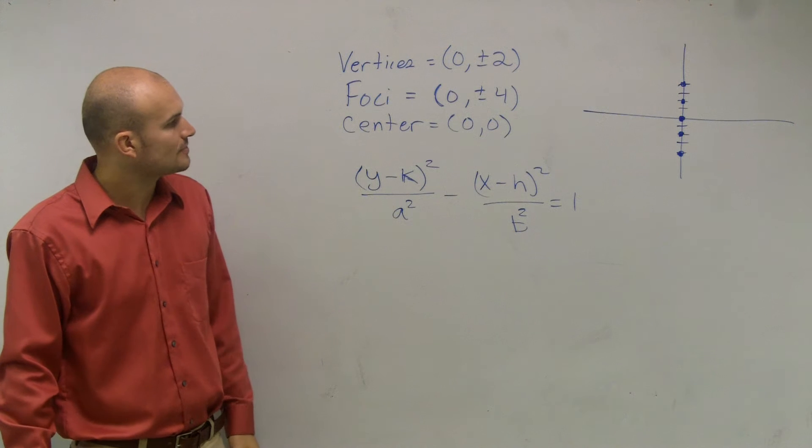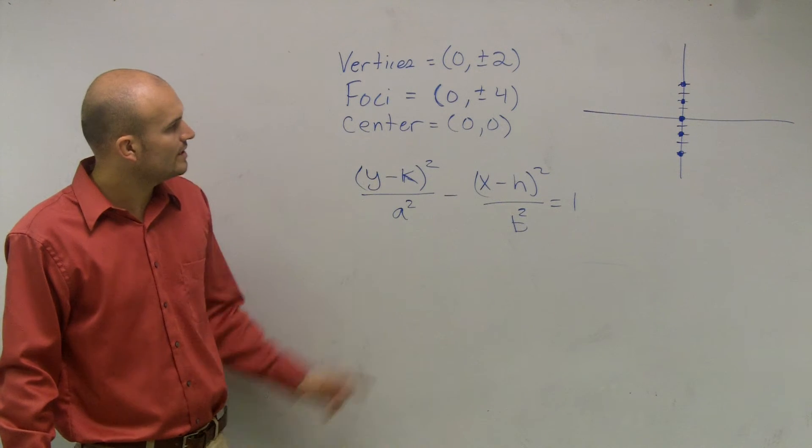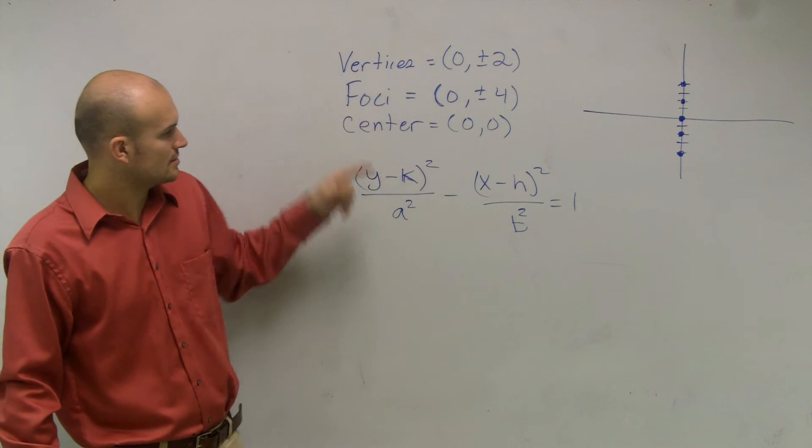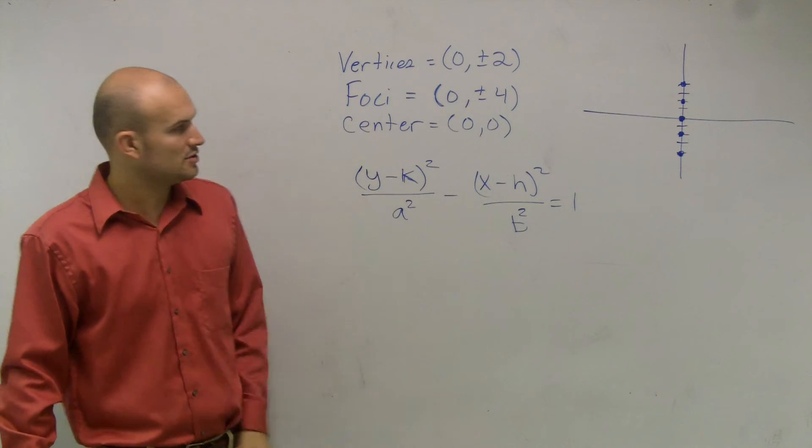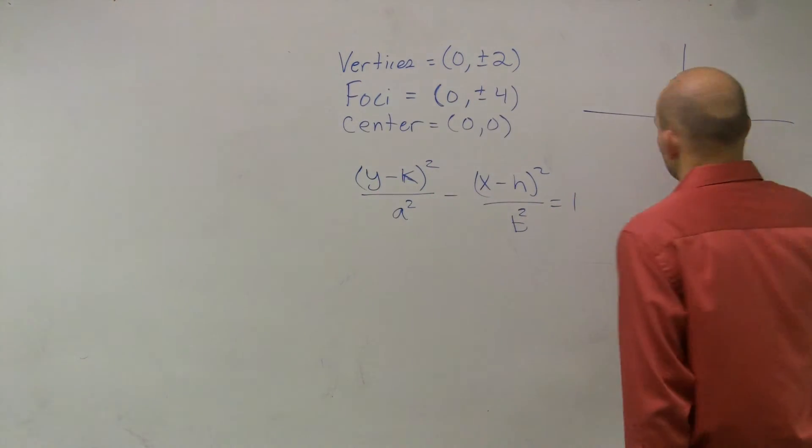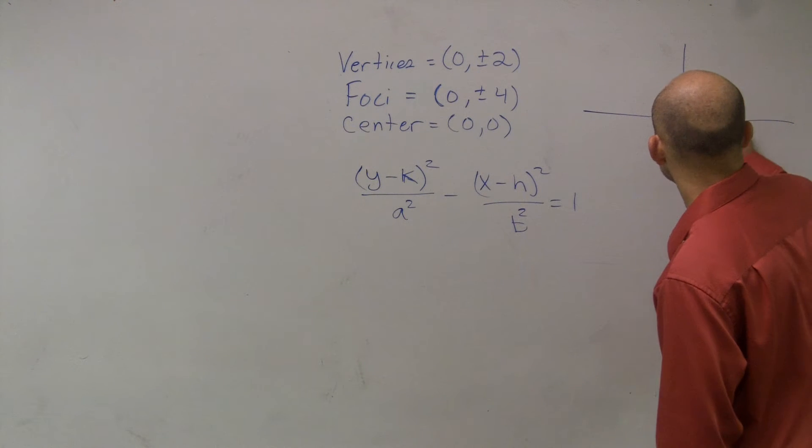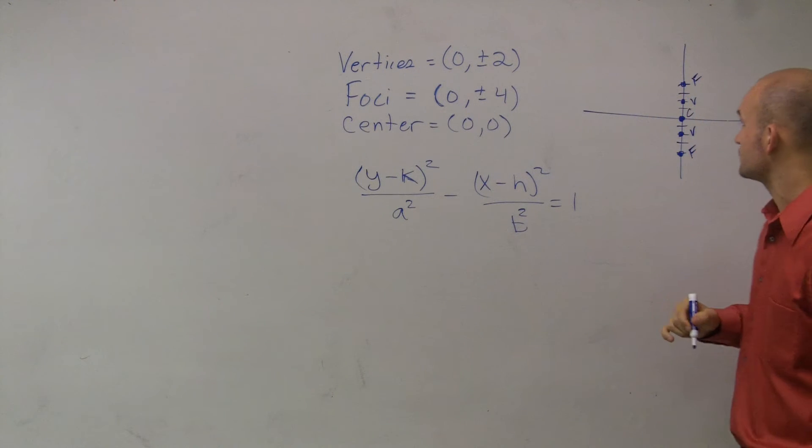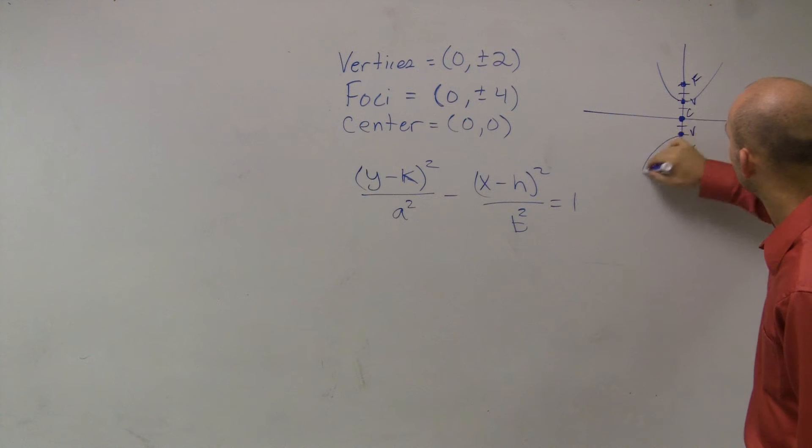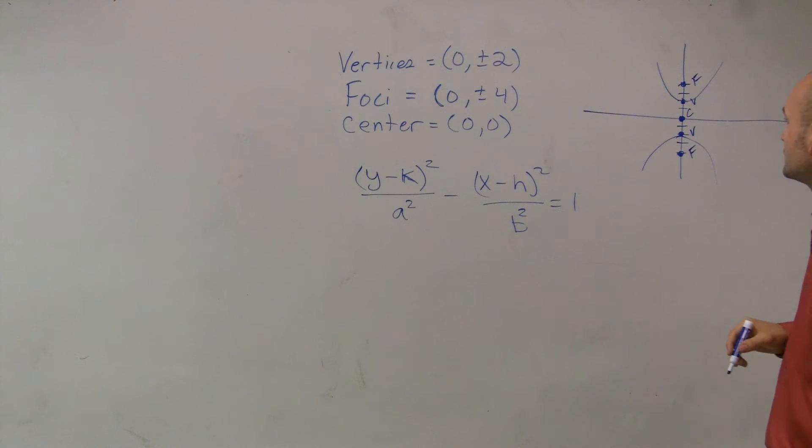So now we know what our a is, we know what our c is, but we don't know what b is. So I don't really know what this hyperbola is going to look like, but remember, if here is my center, this is going to be my vertice, vertice, focus, and my focus. It's going to look something like that.